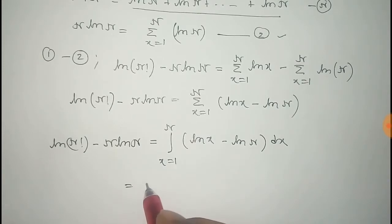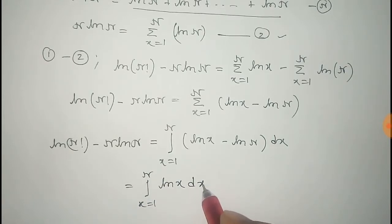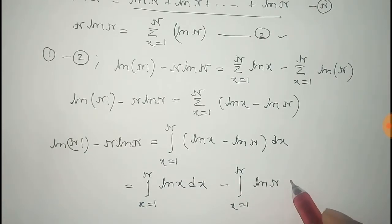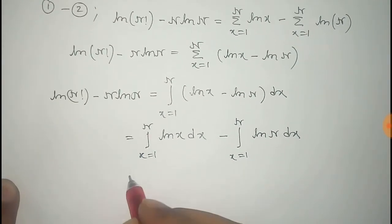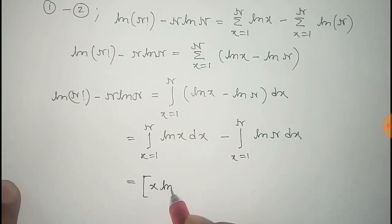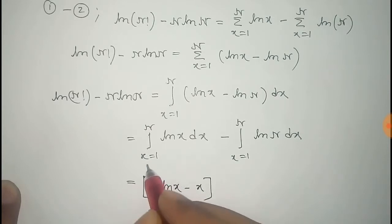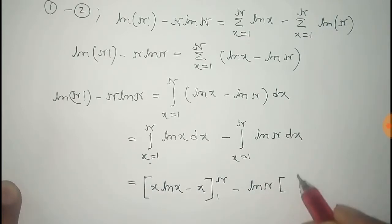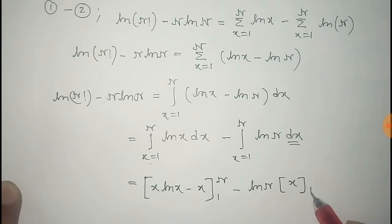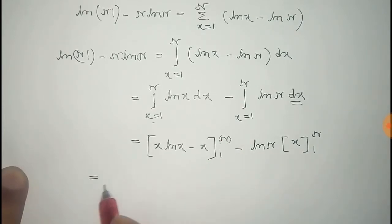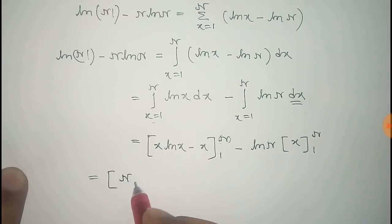Now we integrate this expression. We split it as ∫(1 to n) log(x) dx − ∫(1 to n) log(n) dx. Since log(n) is a constant, it comes out of the second integral. The integral of log(x) dx is x·log(x) − x, evaluated from 1 to n. The second integral gives log(n) · [x] from 1 to n.